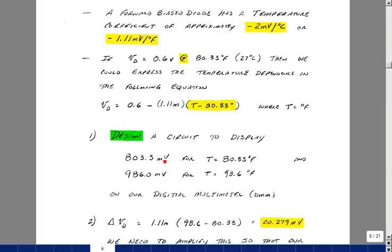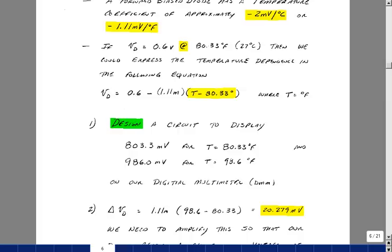For this change in temperature, I'm going to get a change in voltage of the diode, again, going from 98.6 to 80.33, of around 20.279 millivolts.